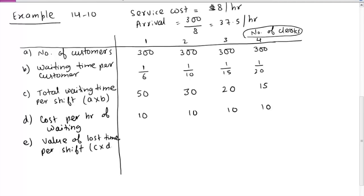An example of a limited calling population: in a small department with only 5 employees and a coffee machine, only 5 people can use that service, so the calling population is very limited. But for a toll booth on a freeway, so many cars come and form a queue that you cannot put a fixed number on it — theoretically the calling population is unlimited. Similarly, the number of people coming to a Walmart or Target on a given day could theoretically be unlimited.